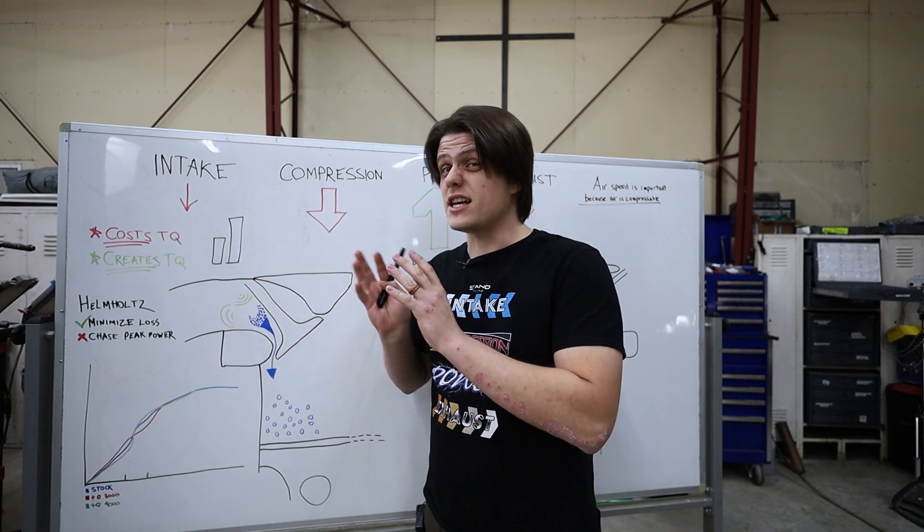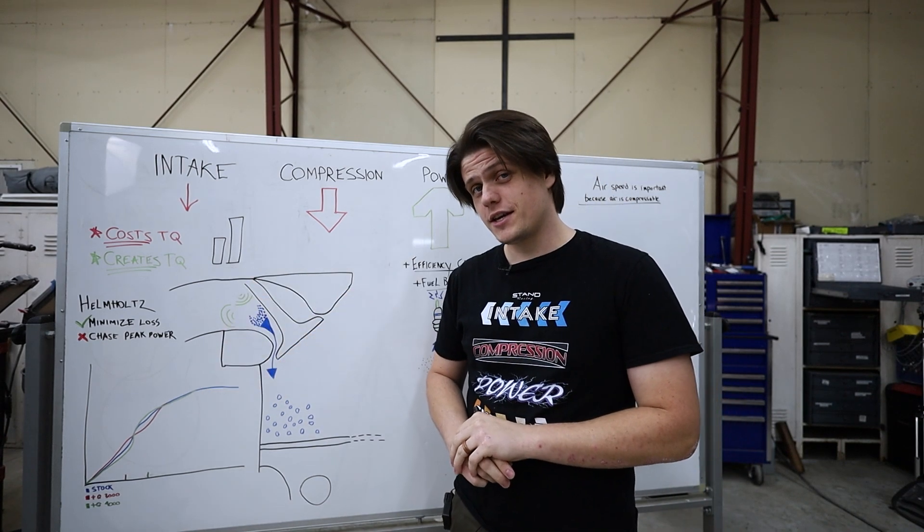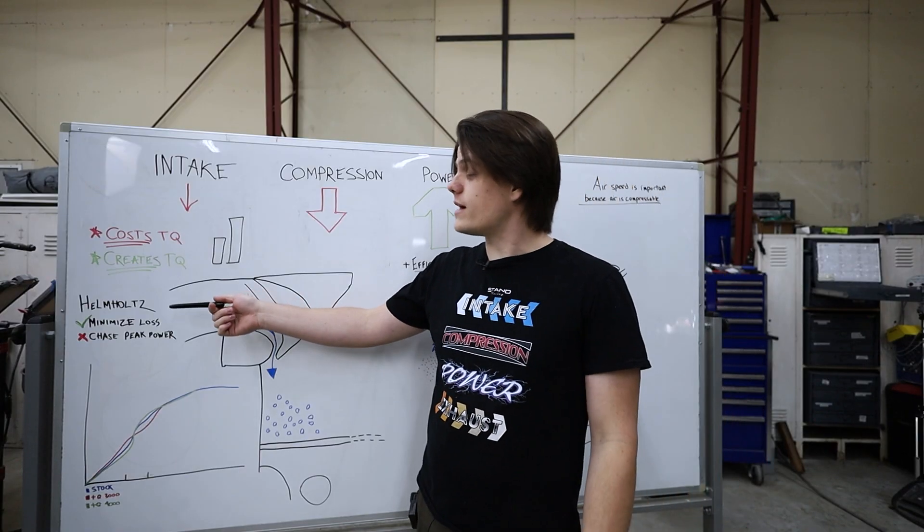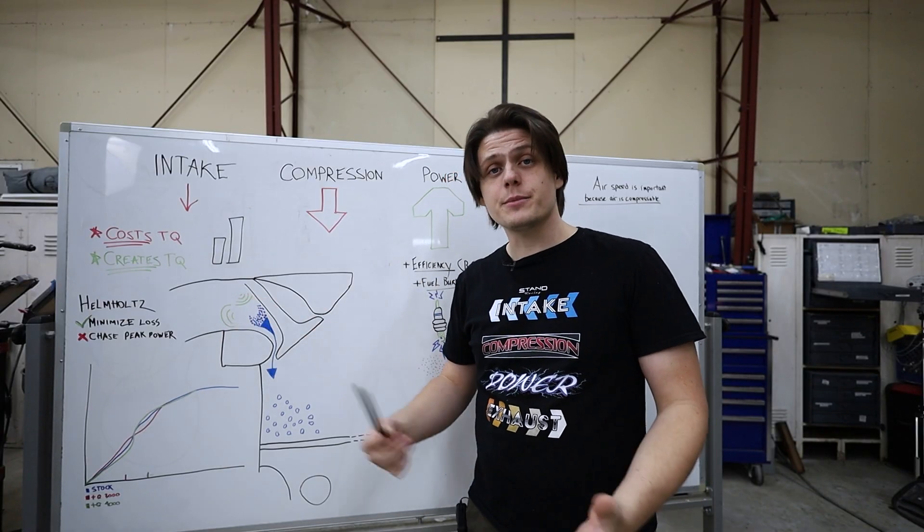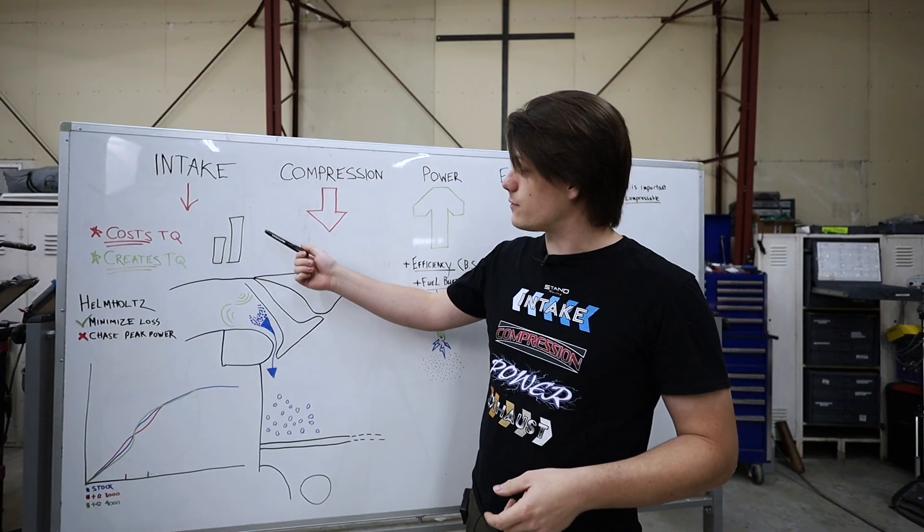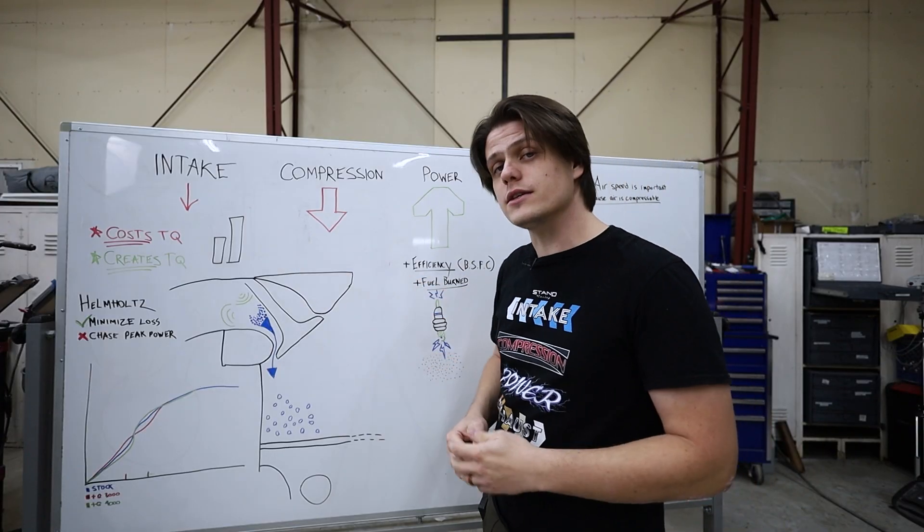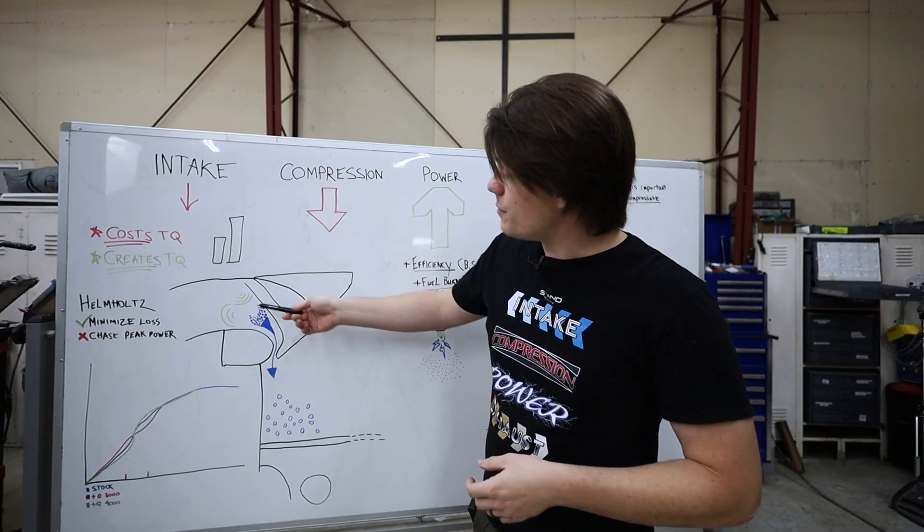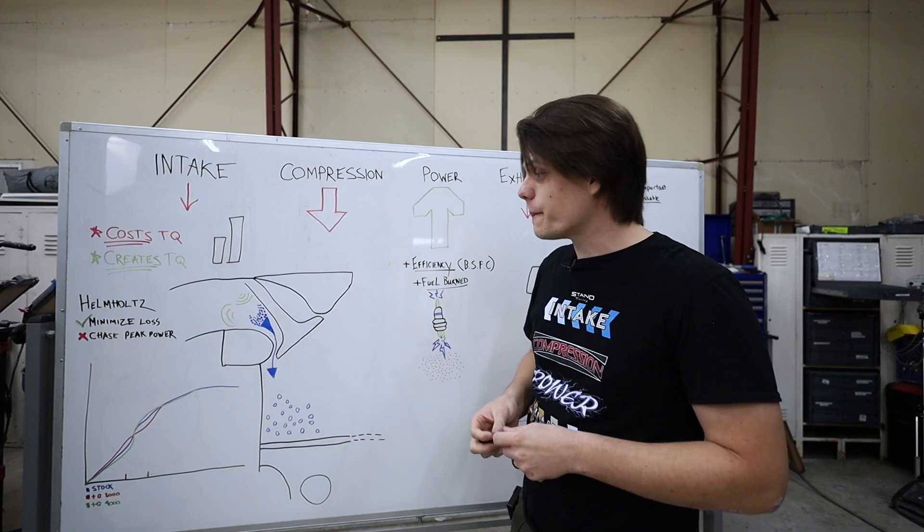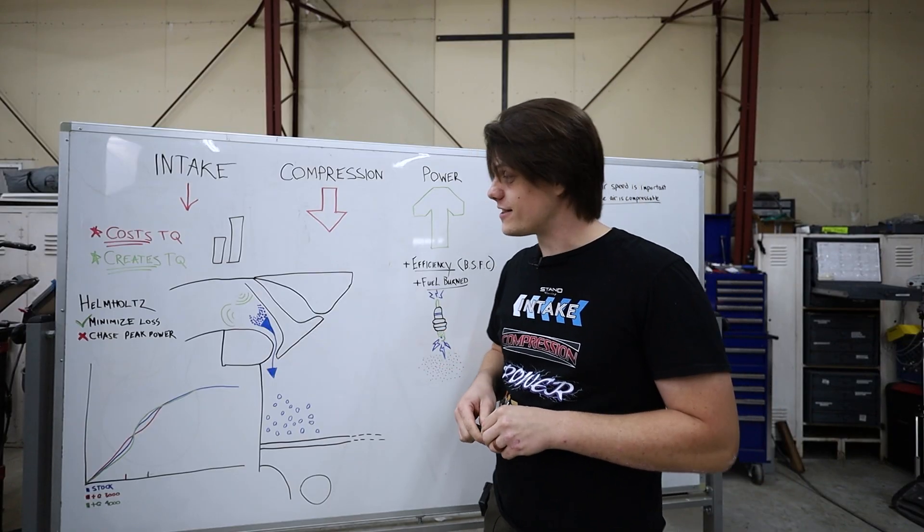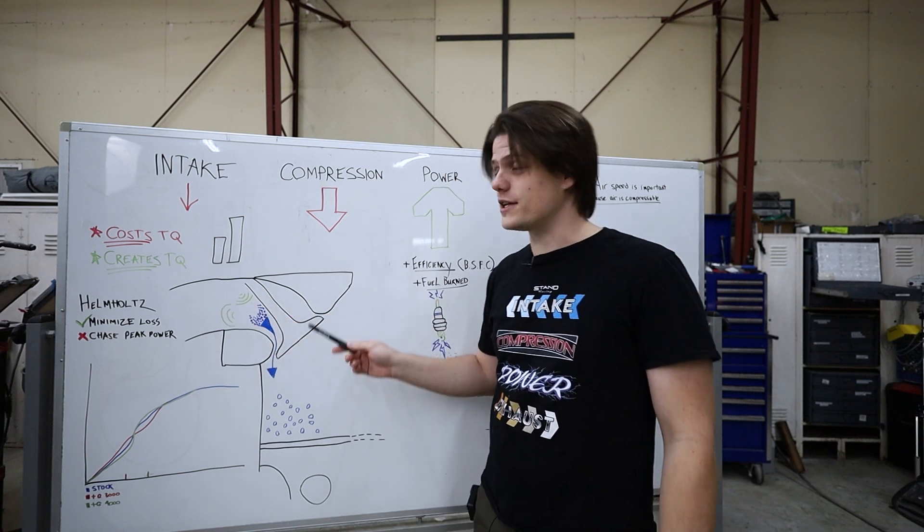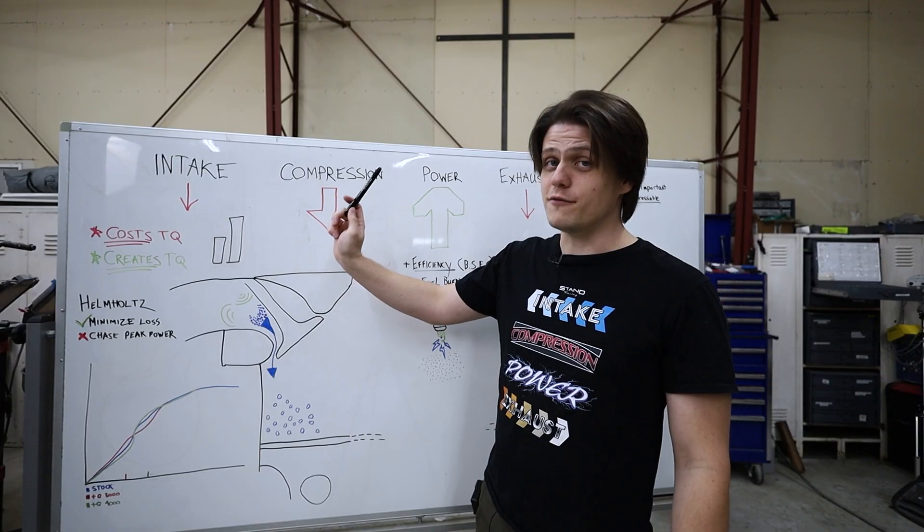So for every bit of performance you gain at a certain RPM range through Helmholtz resonance you lose at a different RPM range that doesn't hit that sweet spot. But the most surprising thing is I thought that Helmholtz resonance was the main contributor for determining your runner length. I thought you calculated the resonant frequency and that was the main reason why you choose a short runner or a long runner because of this pulsating effect that happens because of the valve closing and that is not the case.